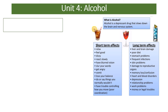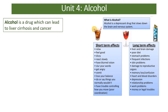Another drug to be aware of is alcohol. Although socially acceptable, it causes serious problems. Alcohol is a drug that can lead to liver cirrhosis and cancer. It is a depressant drug, which means it slows down your nervous system and stops messages crossing the synapses — hence it is illegal to drink and drive. Short-term effects include relaxation but also dizziness, nausea, aggression, and loss of balance and inhibitions. Long-term effects include damage to your liver and brain, and cancer.